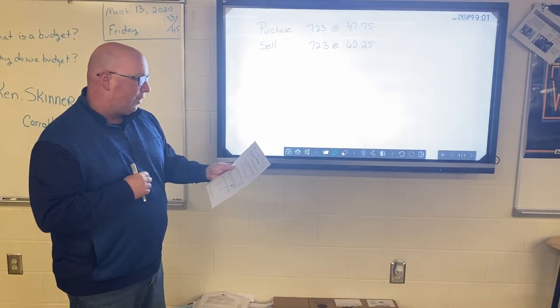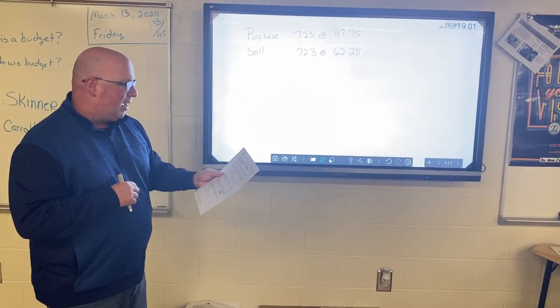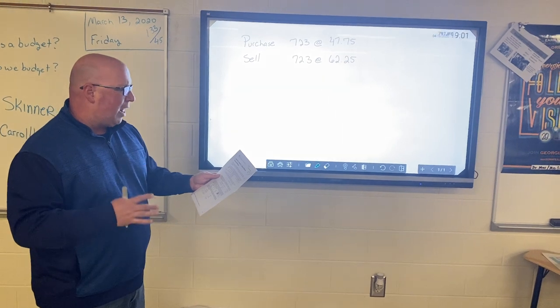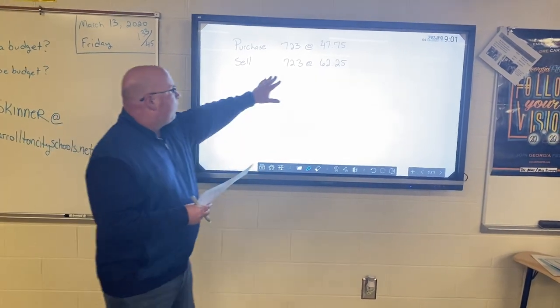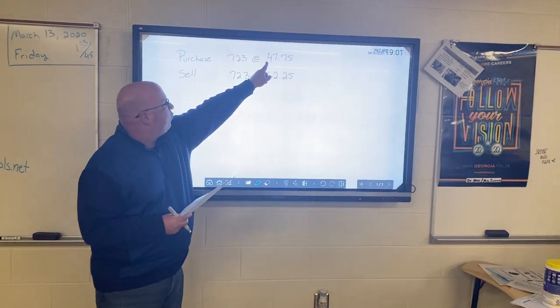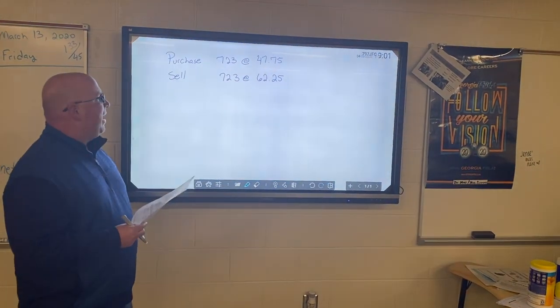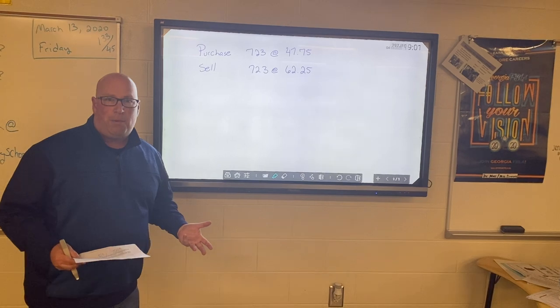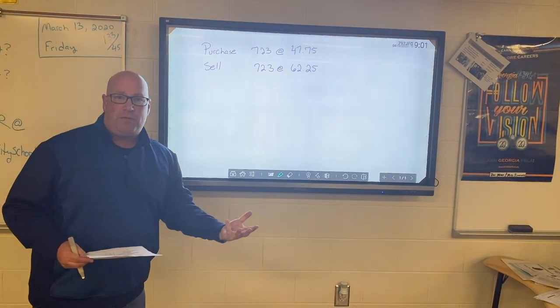So every share costs $47.75. In this illustration, one year later you're ready to sell your 723 shares of stock and you're getting a price of $62.25. So I've written this out here: you're going to purchase or buy 723 shares at $47.75.